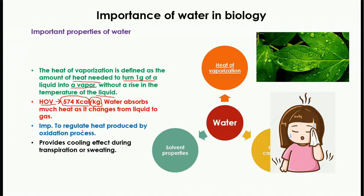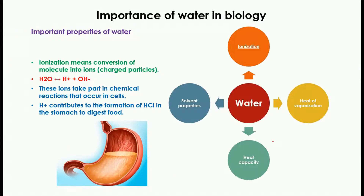The importance of heat of vaporization is that it regulates the heat produced by oxidation processes in the body. Many chemical reactions occur during oxidation, releasing a large amount of energy. Heat of vaporization also provides a cooling effect during transpiration or when you are sweating.